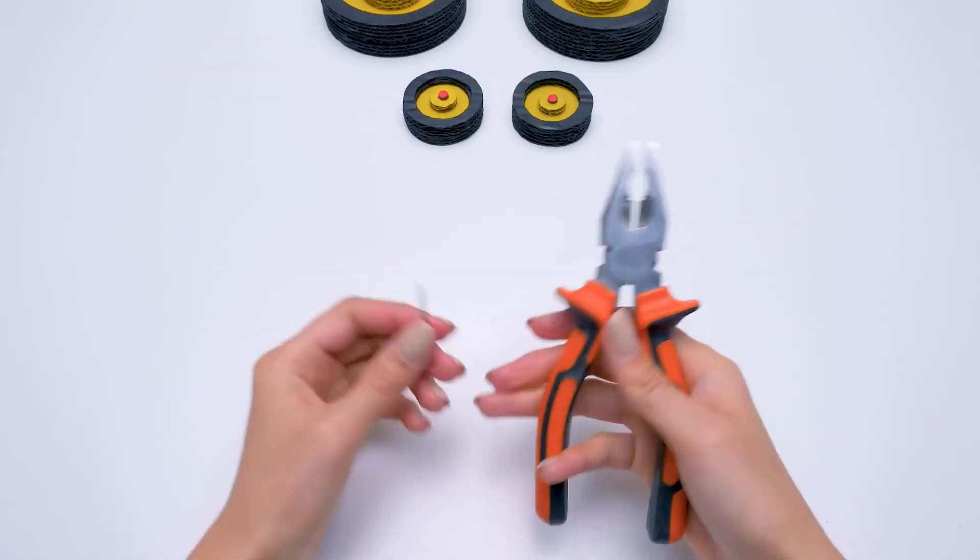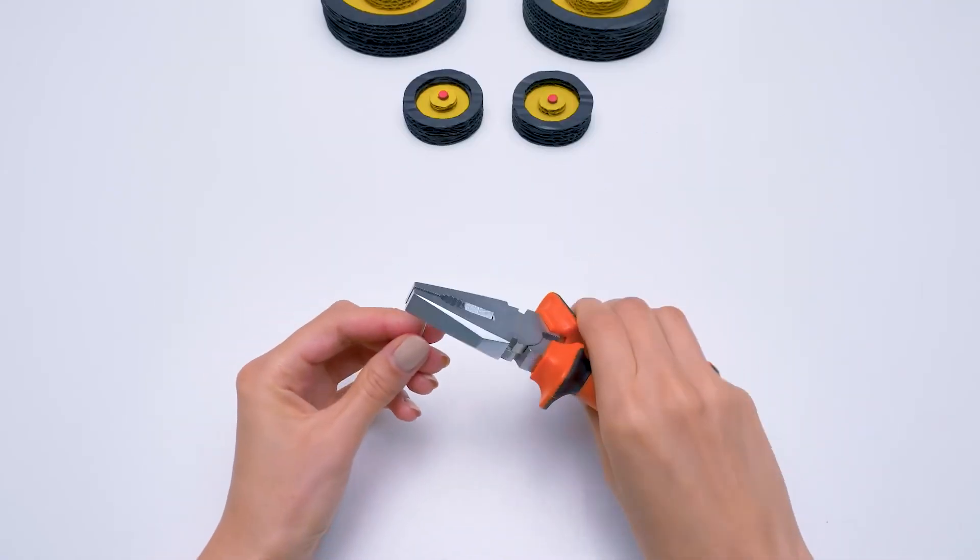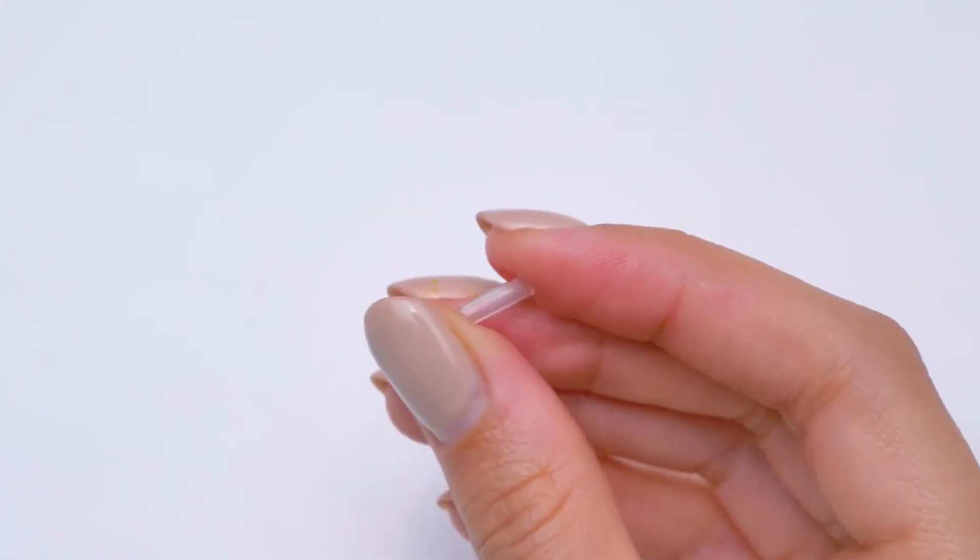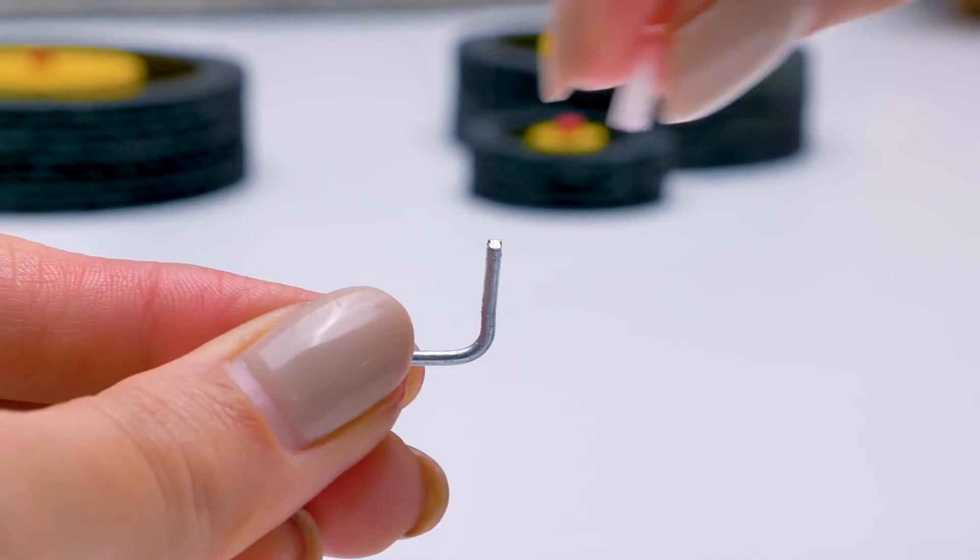And now, using the pliers, we'll make the front axis of our tractor. We'll make a fold, carefully. It should be a 90 degree angle. This rubber part is necessary for an easy axis rotation.